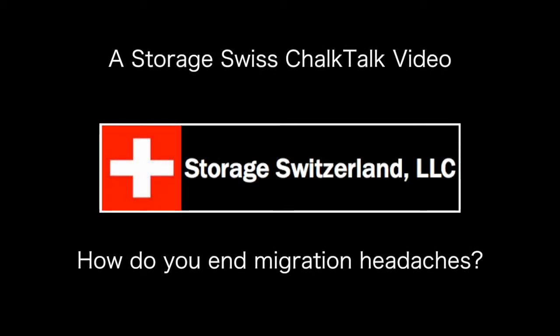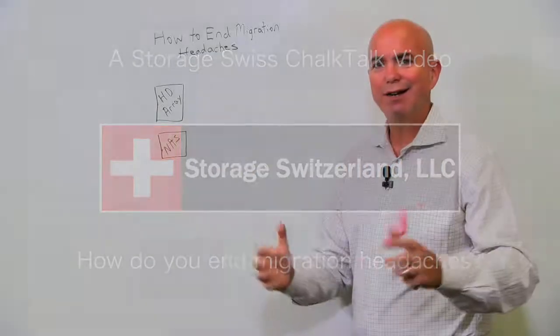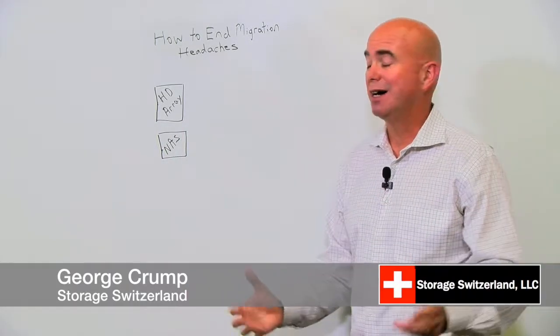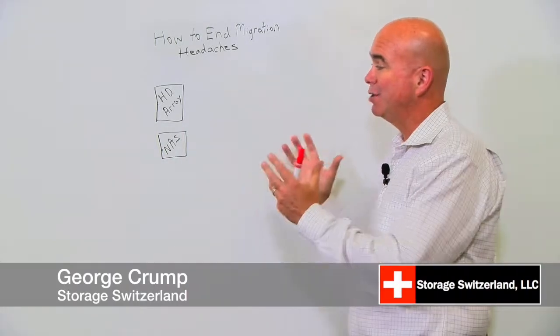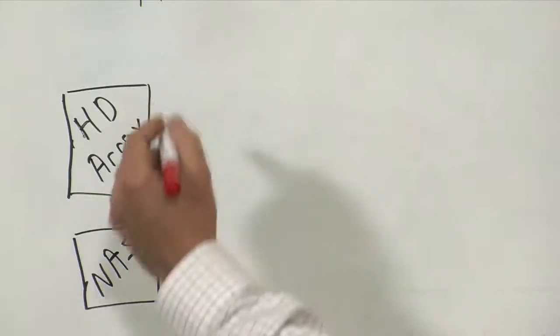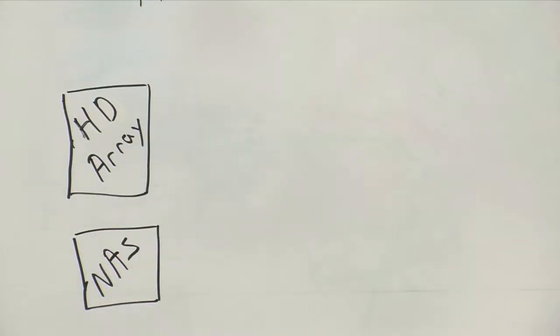How do you end migration headaches? Every data center at some point in their lives — and probably multiple times — is going to have new equipment come in and they're going to have to move old data to new data. So how do you do that? There are a couple of reasons why this might happen. For example, with a hard disk array, you might be out of performance.